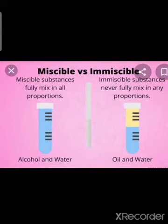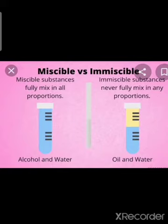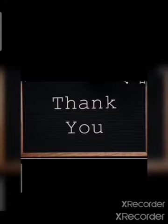The main difference between miscible and immiscible: a miscible mixture is a mixture of two or more liquids that completely combine to form one solution, for example alcohol and water. An immiscible mixture is a mixture of two or more liquids that do not mix completely, for example oil and water. A miscible substance fully mixes in all proportions, while an immiscible substance never fully mixes in any proportion. Thank you so much, stay home stay safe.